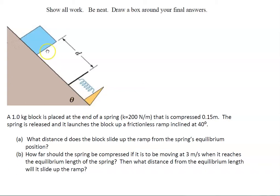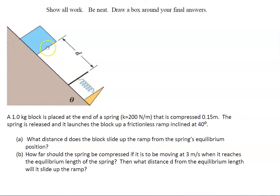Here's our quiz problem. We have a one kilogram block placed at the end of a spring. We're going to compress the spring 0.15 meters, put the block against it, and then shoot the block up a frictionless ramp inclined at 40 degrees.